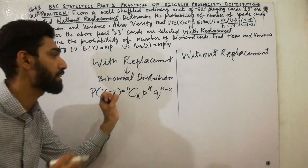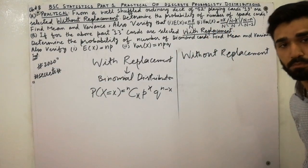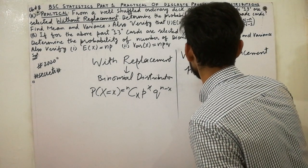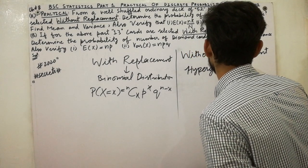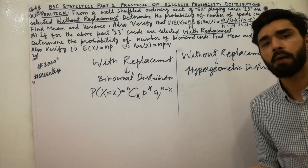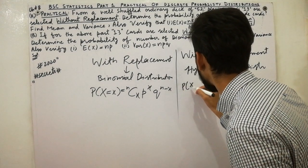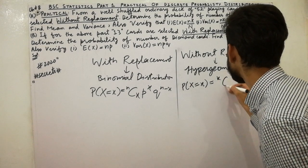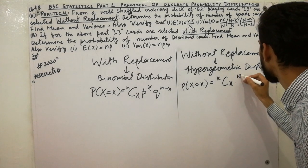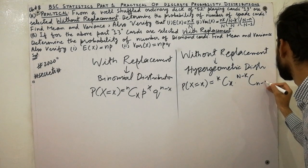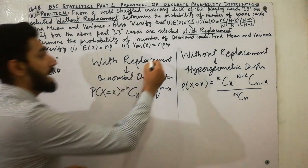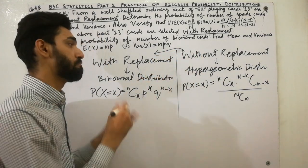Next, without replacement — must remember that in without replacement we always use hypergeometric distribution. The formula of hypergeometric distribution is: P(X = x) = [kCx × (N−k)C(n−x)] / NCn. That is the difference — in each practical, must remember these secrets which nobody tells you.